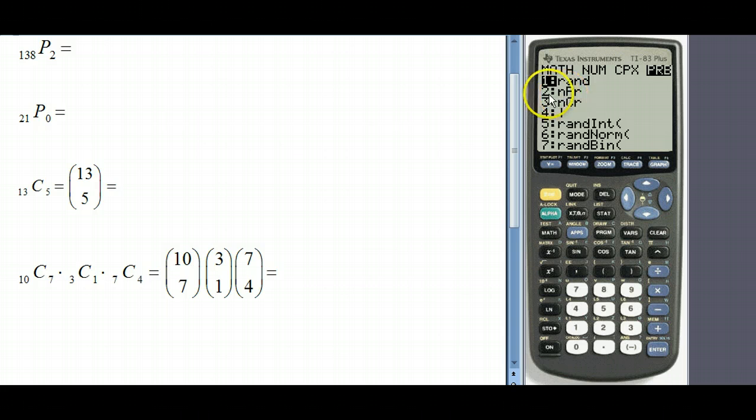From here you'll see that I have in option number two the nPr, so the permutation of n things taken r at a time. For option three I have the combination of n things grouped r at a time.